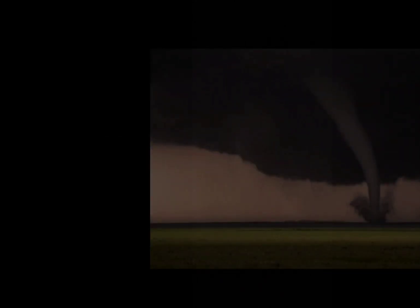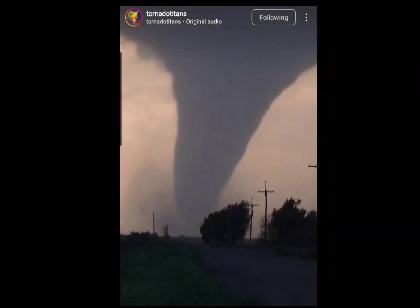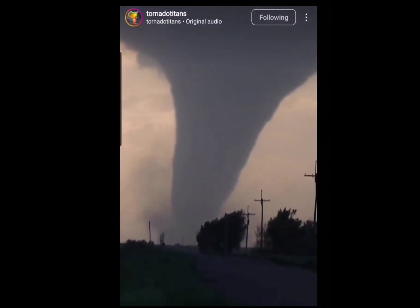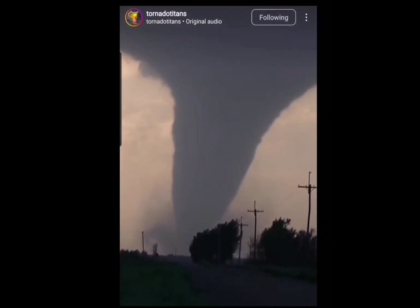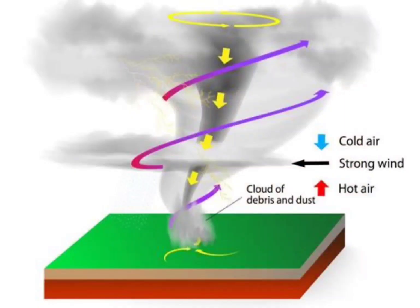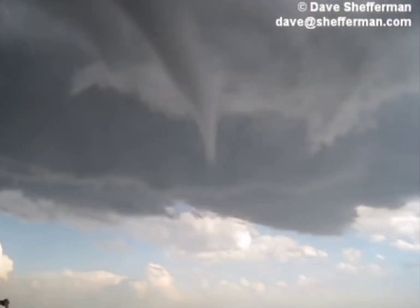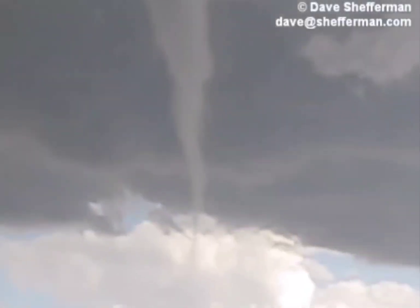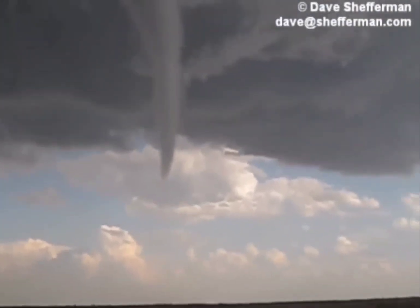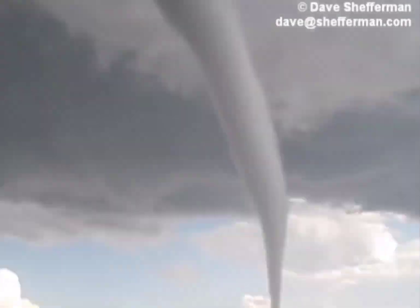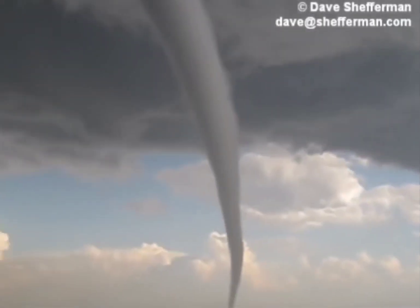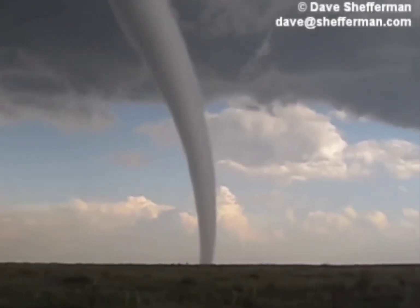One of the most destructive forces in nature, with a motion so violent its intensity is rated by how much damage it causes. A tornado is a rapidly rotating column of air that forms during a thunderstorm when cold dry air becomes intertwined with warm humid air. Warm air rises due to it being less dense than cold air, creating an updraft. This motion causes the wind to start changing direction and, as it picks up speed, begins to form a funnel. Once the funnel reaches the ground, it's called a touchdown — or you might hear the words 'a tornado is on the ground.'